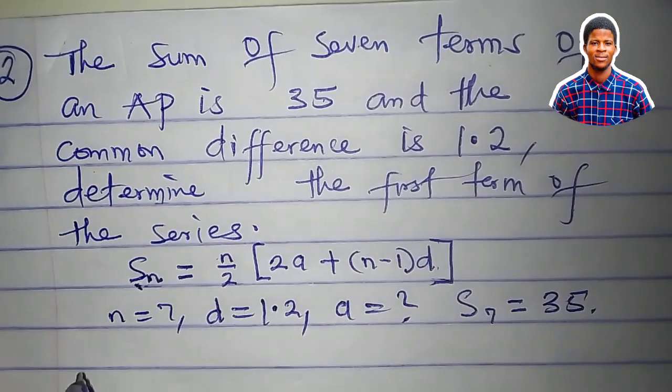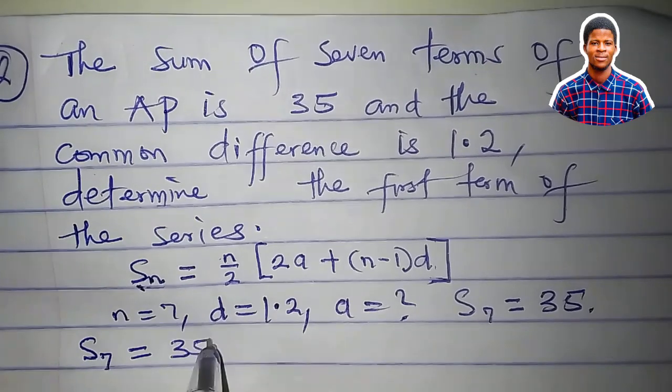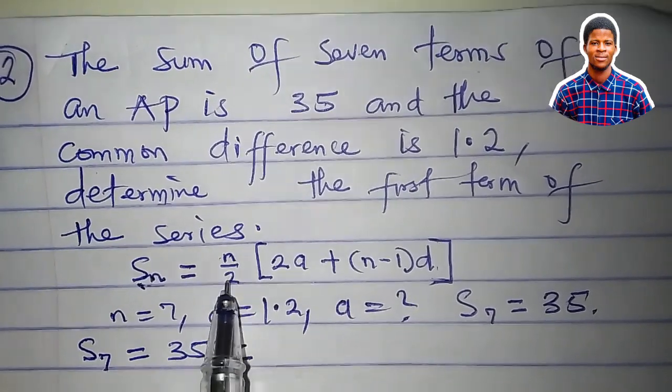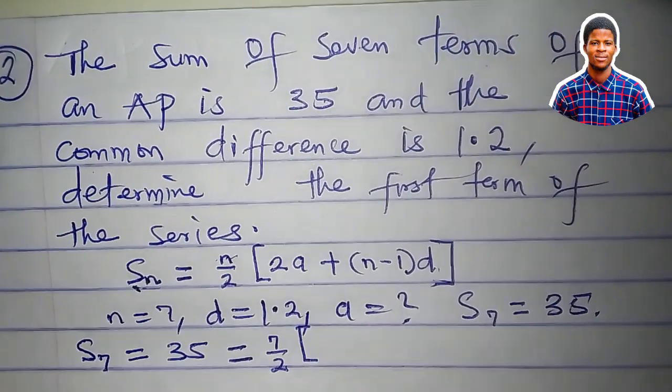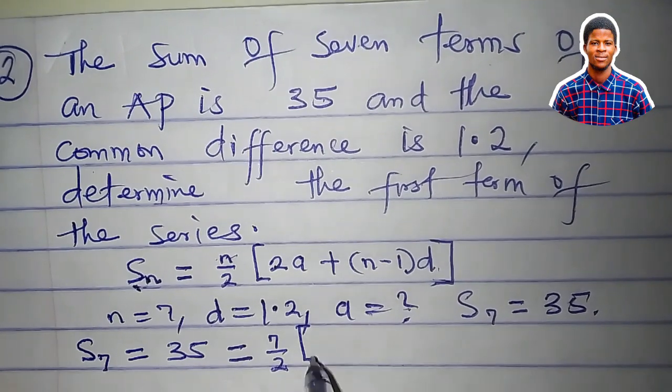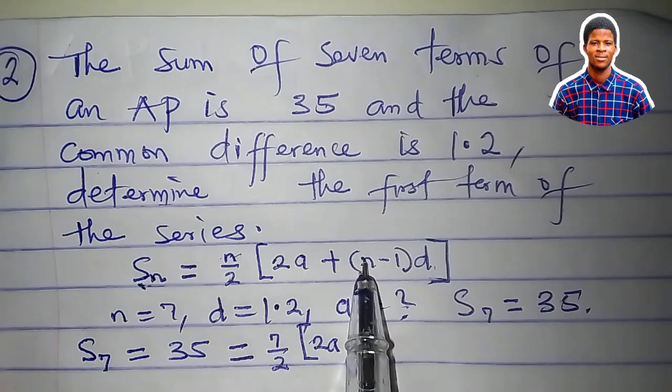So we have S_7, which equals 35, equals n over 2. What's n? 7 over 2 times 2a.